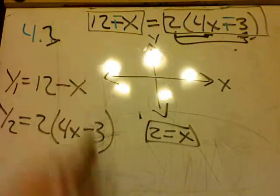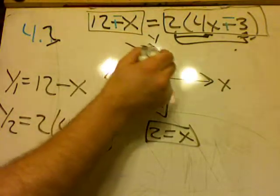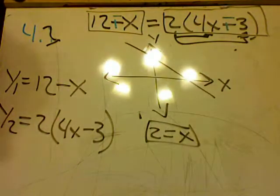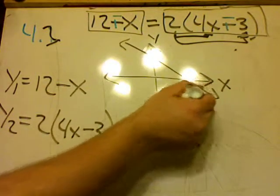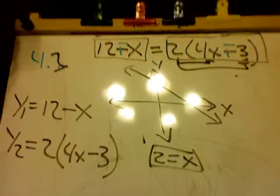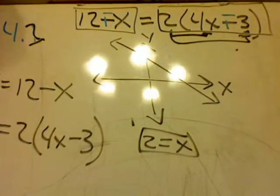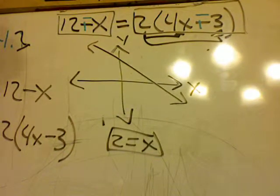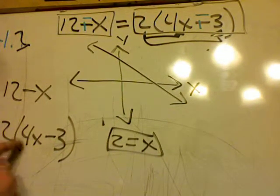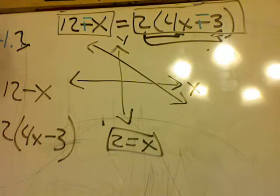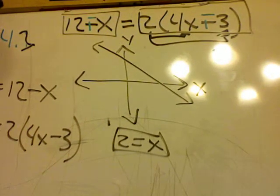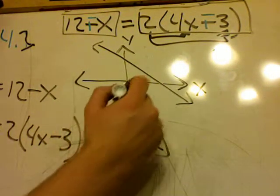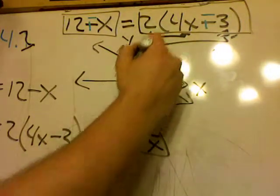When I graph these, 12 minus x, 12 minus x is a line something like that. If you can see out of the glare, my alien lights. There we go. When I graph 2 times the quantity 4x minus 3, it's going to give me something that looks a little bit like that.